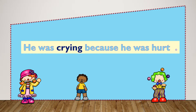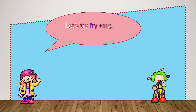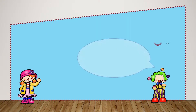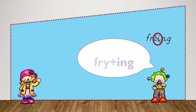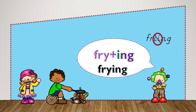He was crying because he was hurt. Let's try it with fry plus the suffix -ing. If we took the Y off of fry we would end up with two I's next to each other. We cannot do that, so we just leave the Y in place and add our suffix -ing. Frying.